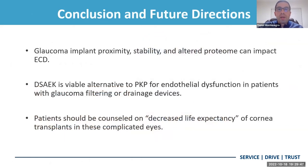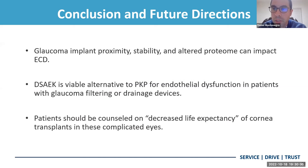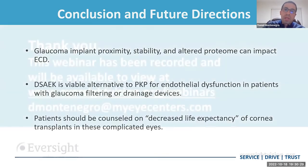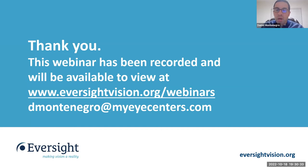In conclusion, glaucoma implant proximity, stability, and the altered proteome can all affect endothelial cell density. DSAEK is a very viable alternative to PKP in patients with endothelial dysfunction and glaucoma filtering surgeries or drainage devices. Always remember to have that chair time with your patients — sit down and explain to them that there is a decreased life expectancy of the cornea transplant in the presence of an implant, a trab, or a glaucoma drainage device. These corneas will not last as long in the presence of these previous glaucoma surgeries. Thank you all for your attention, thank you to Eversight for this opportunity, and thanks to Michael for helping host the event. Please feel free to send me an email with any questions.